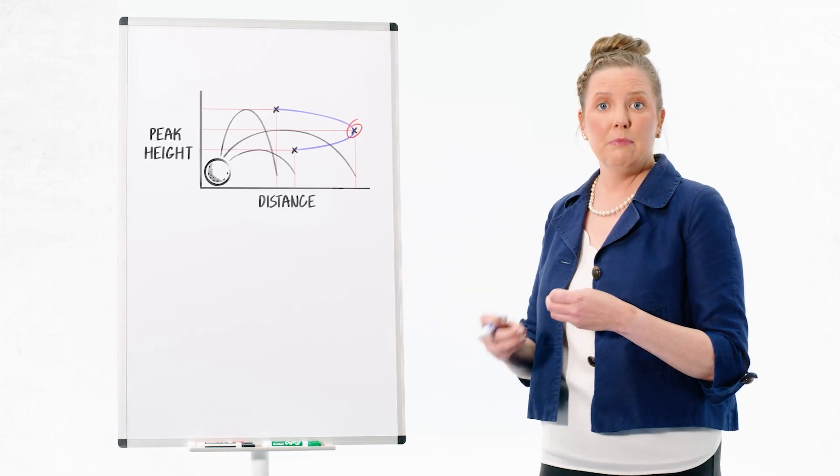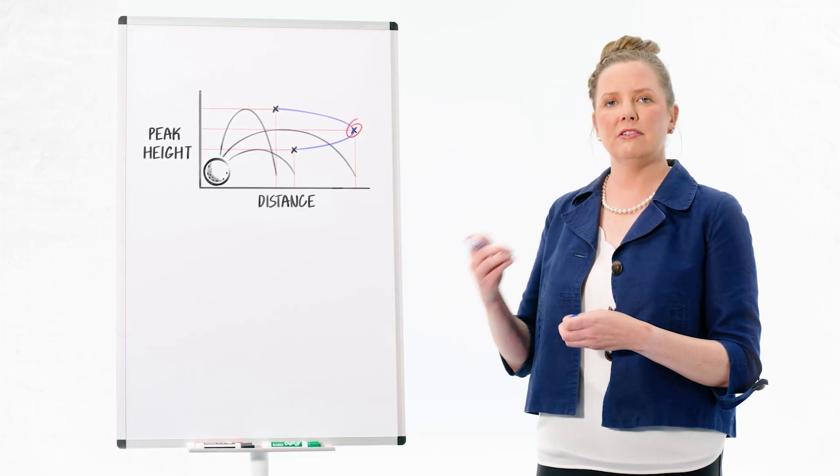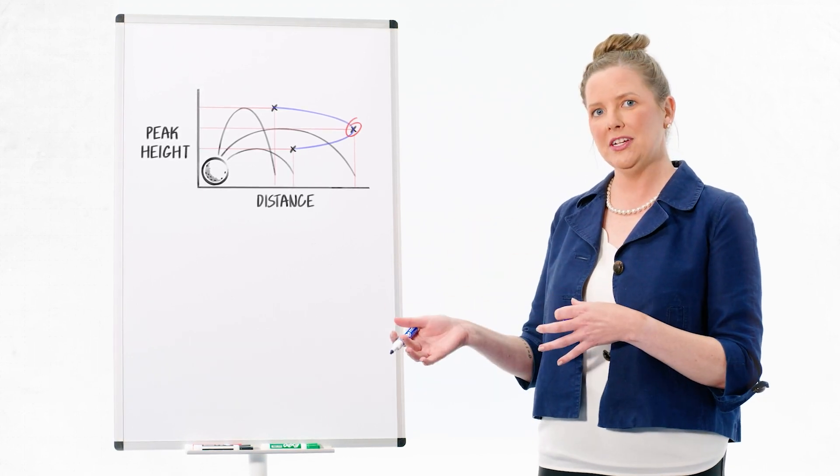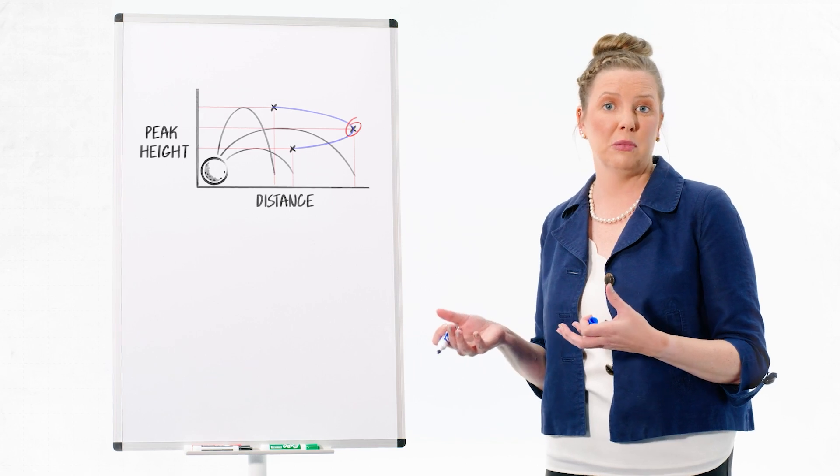When we talk about the depth difference, we're talking about a difference on the order of two tenths of a thousandth of an inch. For some context, that's about the size of a human red blood cell.